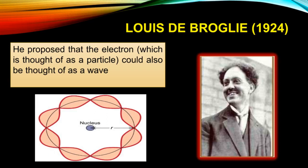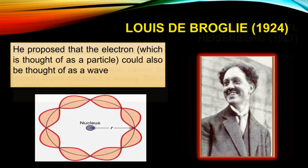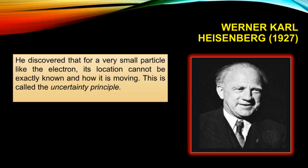Bohr's model shows a tiny nucleus with electrons revolving in concentric orbits. Louis de Broglie (1924) was an eminent French physicist who gained worldwide acclaim for his groundbreaking work on quantum theory. In his 1924 thesis, he discovered the wave nature of electrons and suggested that all matter has wave properties. He won the 1929 Nobel Prize in Physics and proposed that the electron, thought of as a particle, could also be thought of as a wave.